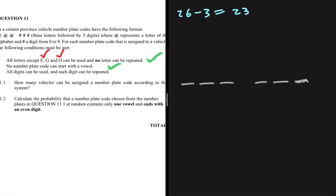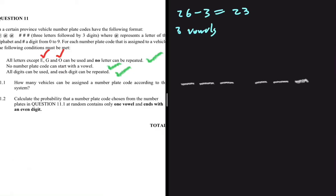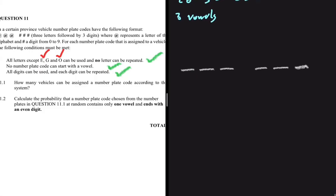So we have three usable vowels. The third condition is that all digits can be used and each digit can be repeated. So the digits can be repeated, but no letter can be repeated, as stated in the first condition.